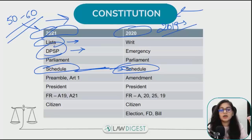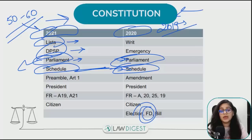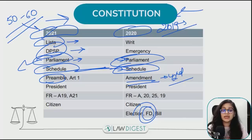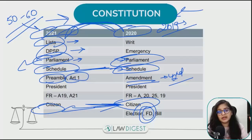DPSP - Directive Principles - के साथ साथ Fundamental Duties भी important है। Parliament का composition, Rajya Sabha, Lok Sabha, ministers के बारे में, parliament का procedure और जो devices हैं - वो important है। 2020 में भी parliament से questions आए हैं। Preamble is also important - 42nd amendment के दुरू preamble में जो amendment हुआ वो पूछ लेते हैं। Article 1 and citizenship (Article 5 onwards) भी important है, considering की Citizenship Act आया था और उससे related बहुत protests हुए।